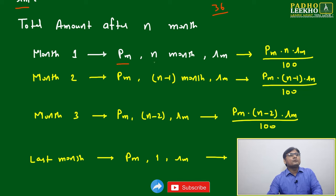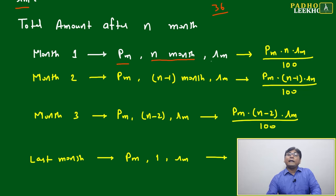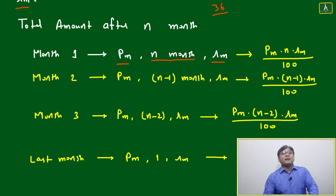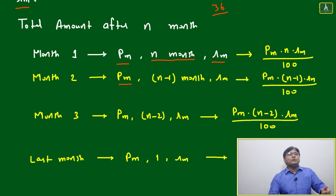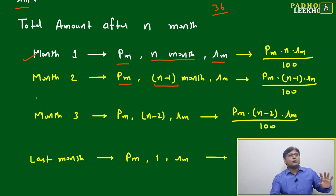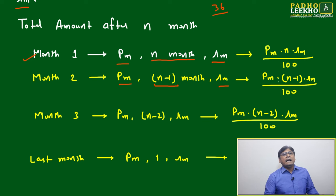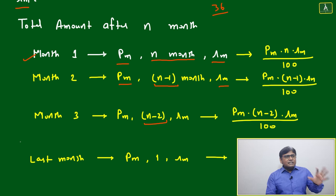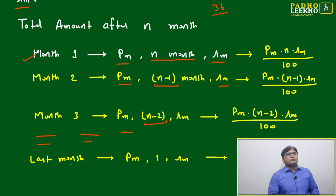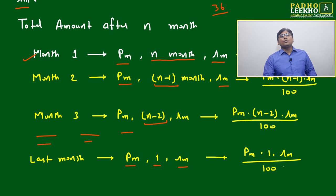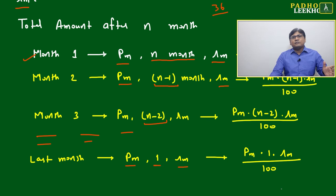For month 1, you put amount PM and get interest for N months at rate RM, giving PM × N × RM / 100. For month 2, you put PM but get interest for only N−1 months, giving PM × (N−1) × RM / 100. For month 3, you get N−2 months of interest. Continuing this pattern, for the last month you put PM and get interest for only 1 month: PM × 1 × RM / 100.